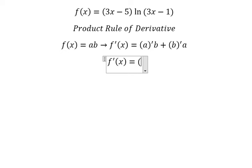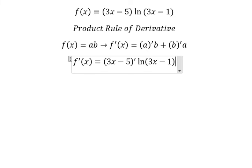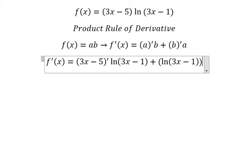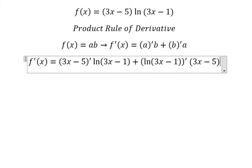So we do first derivative of 3x minus 5 multiplied by ln of 3x minus 1. Later that, we do first derivative of ln of 3x minus 1 multiplied by 3x minus 5.